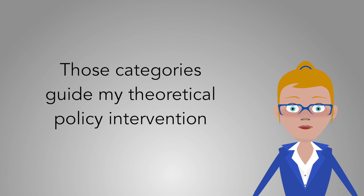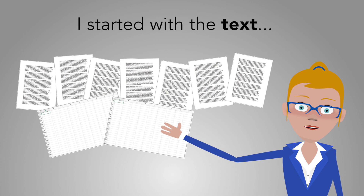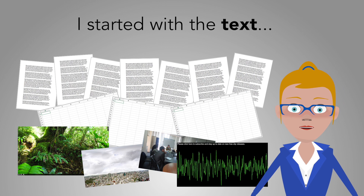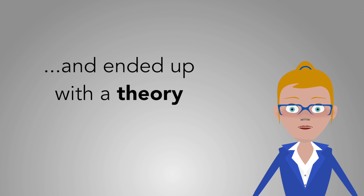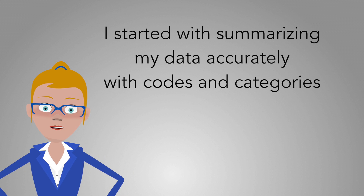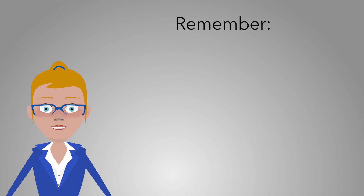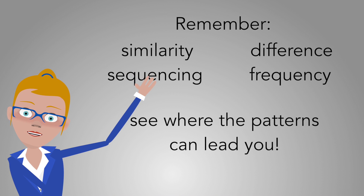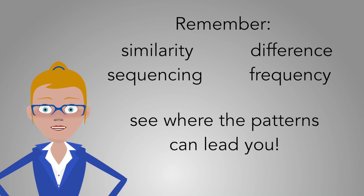And then from those categories, you're developing an idea of here's a theoretical intervention I want to make. Given my text, here are the understandings and explanations I have of a particular phenomenon — or given these visual representations of a particular phenomenon, here are my explanations. I've moved from thorough coding at the textual level to broader understandings and explanations of what's going on. Thinking always with similarity, difference, sequencing, and frequency — those tend to be some of the key ways of thinking about how codes and categories relate to one another.